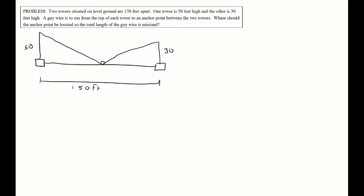So you have a wire going from the top of each tower to some anchor point, and we're trying to find the minimum total length of that guy wire — that's what we're trying to optimize. The equation: the length from tower A is different from the length from tower B, so I'll use two variables — length a and length b. My primary equation is: m = a + b, and I'm trying to make that a minimum.